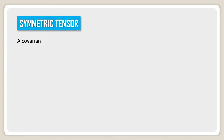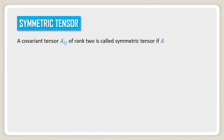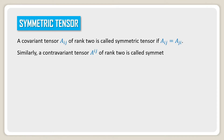Symmetric tensor. A covariant tensor a_ij of rank 2 is called a symmetric tensor if the lower suffix ij is equal to the lower suffix ji. Similarly, a contravariant tensor a^ij of rank 2 is called symmetric if the upper suffix ij is equal to the upper suffix ji.